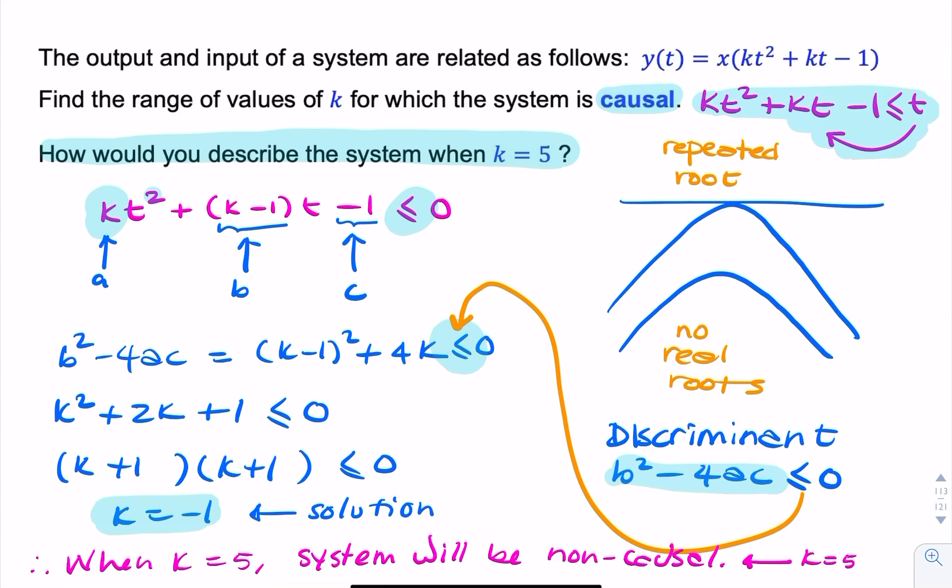If you substitute 5 instead of k, you would have a quadratic that would, on occasion, be greater than t. So you could say the system is non-causal because there are instances in time when this expression would be greater than t.